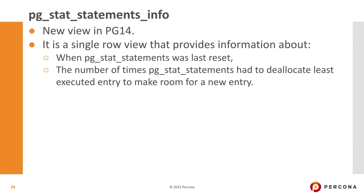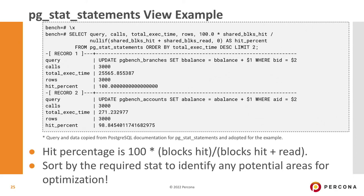pg_stat_statements_info is the view that tracks how many times deallocation has been done and when the view was last reset, giving you context about when these statistics were gathered. One example from the documentation is about the buffer hit ratio. A drop from 100% to 98% looks small but is significant for cache, because the overhead of cache misses is an order of tens, not single digits.